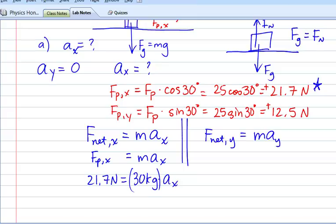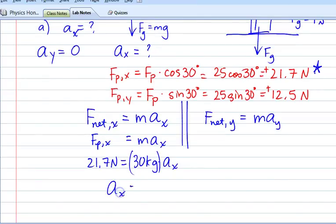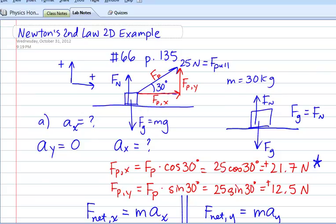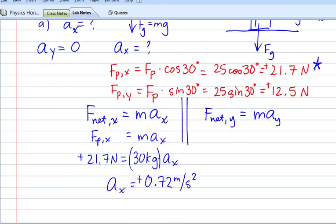30 kilograms times ax. And then if we solve that for ax, we're going to get about 0.72 meters per second squared. That's a positive number because we had a positive value for the net force because it was pulling to the right. We said that to the right was positive. So that's our answer to part A.